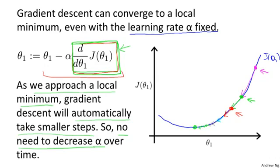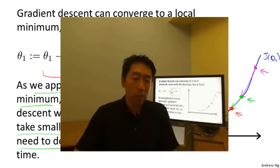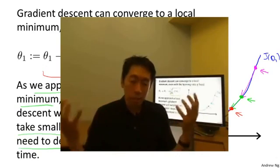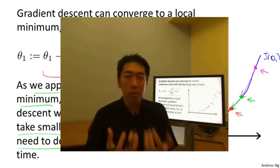That's the gradient descent algorithm, and you can use it to minimize any cost function j—not just the cost function defined for linear regression. In the next video, we're going to set j back to be linear regression's squared cost function. Taking gradient descent and the squared cost function and putting them together will give us our first learning algorithm: the linear regression algorithm.